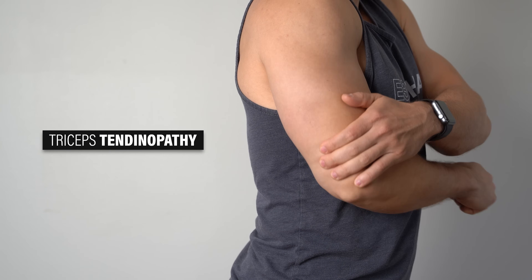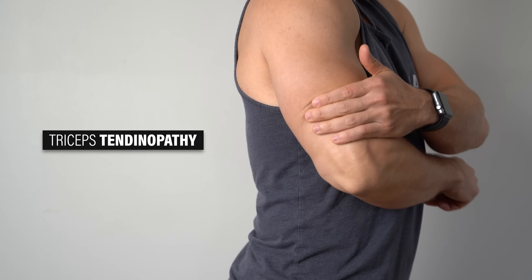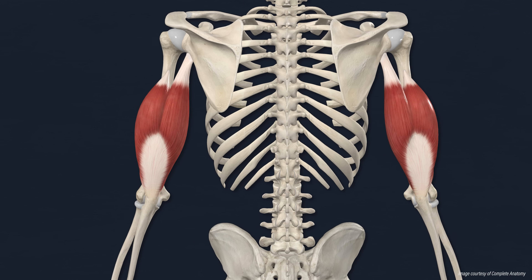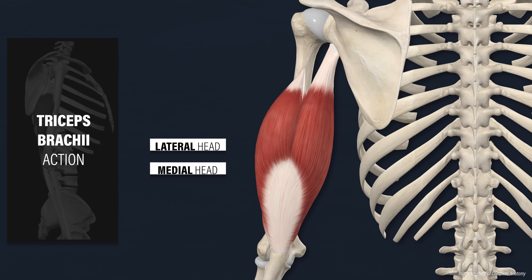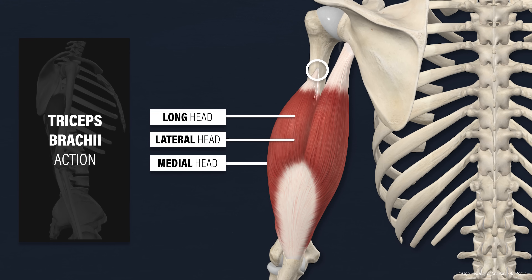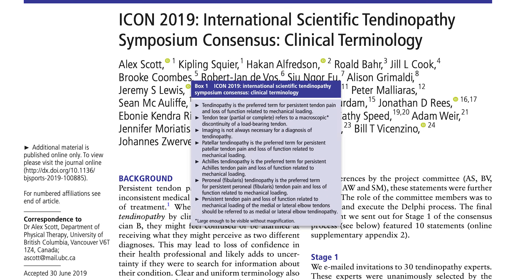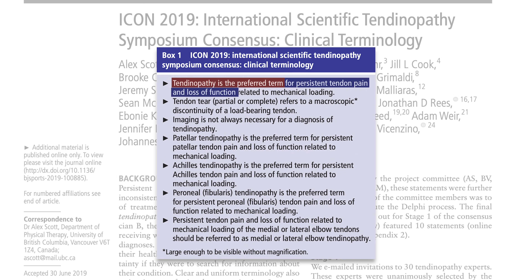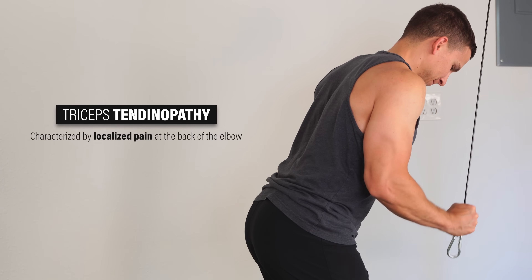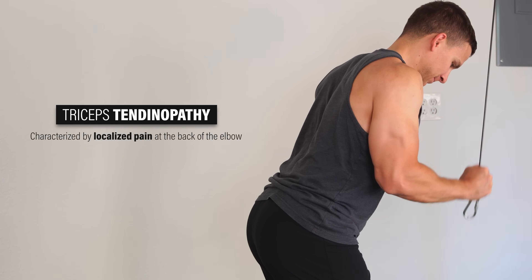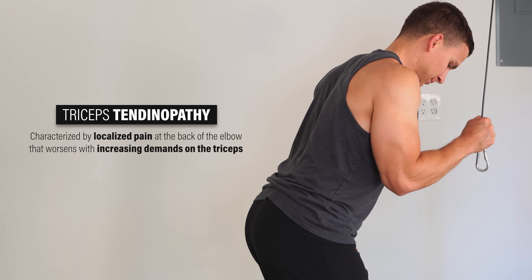Triceps tendinopathy follows similar logic. The triceps brachii is a three-headed muscle that's visible in the back of the arm. The medial and lateral heads originate on the humerus, while the long head actually attaches up at the scapula or shoulder blade. All three heads insert on the olecranon of the ulna via a common tendon and act to extend or straighten the elbow. Since tendinopathy refers to persistent tendon pain and loss of function related to mechanical loading, triceps tendinopathy is characterized by localized pain at the back of the elbow that worsens with increasing demands on the triceps.